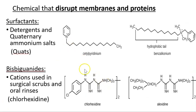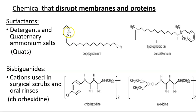Other chemicals that disrupt membranes through a slightly different mechanism include surfactants — surface-acting agents. They have a long hydrocarbon chain but no hydroxyl group. Things like detergents or quats — quaternary ammonium salts — have a highly charged positive ammonium group and insert themselves into the membrane, disrupting structure and causing cell rupture or protein denaturation. Bisbiguanide is a cationic compound found in surgical hand scrub detergents and also in mouthwashes, and it works by disrupting membranes and proteins.